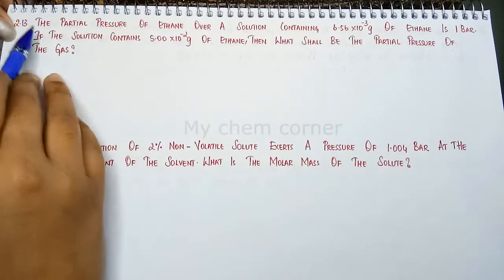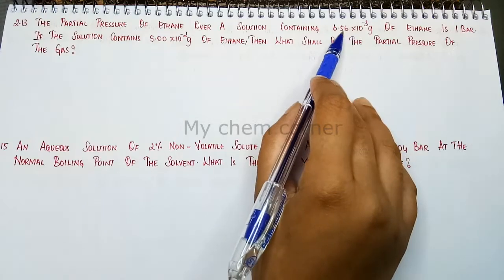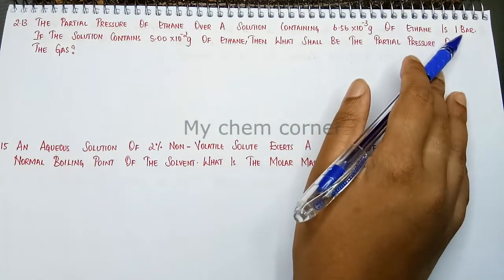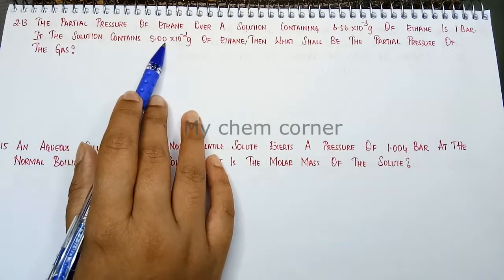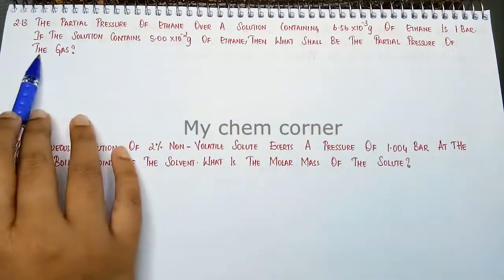Next is question number 2.13. The partial pressure of ethane over a solution containing 6.56 × 10⁻³ grams of ethane is 1 bar. If the solution contains 5.00 × 10⁻² grams of ethane, then what shall be the partial pressure of the gas?